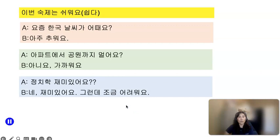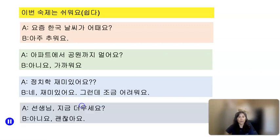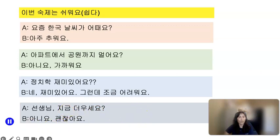Number four: 정치 — political science class — 어때요? 재미있어요? 네, 재미있어요. 그런데 it's a little bit difficult: 어려워요. Number five: 선생님, 지금 더우세요? Because this question is addressed to a teacher, you use the honorific form: 덥다 → 더워요 → 더우세요. The answer: 아니요, 괜찮아요.